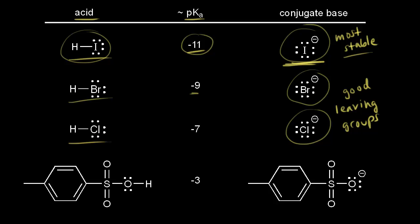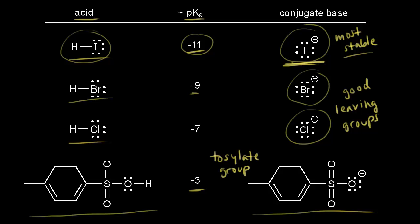Next let's look at p-toluenesulfonic acid with a pKa value of negative three — so it's still pretty acidic. The conjugate base is called a tosylate group. And since it's a bulky group, instead of drawing it out all the time, you often see OTs written, and you can put a negative charge on the oxygen. So you'll see the tosylate group function as a leaving group in many reactions.